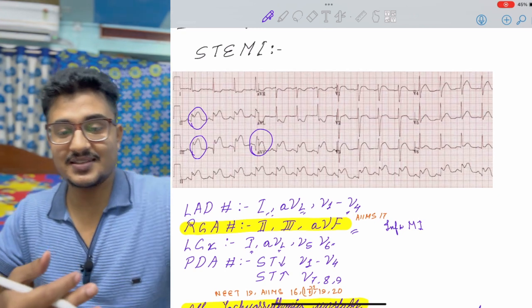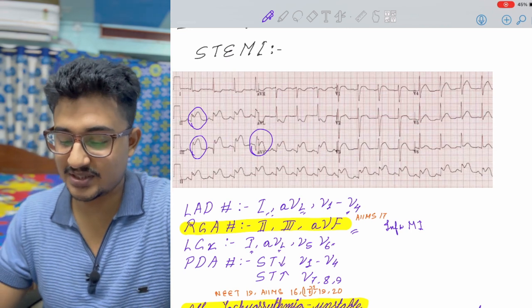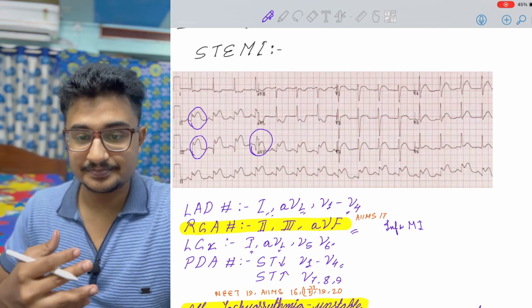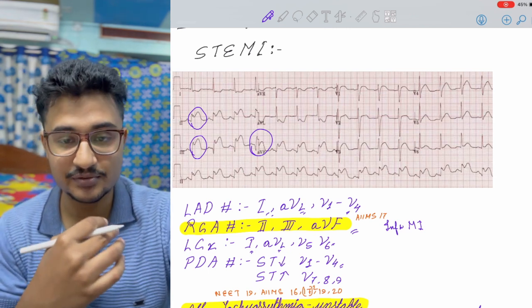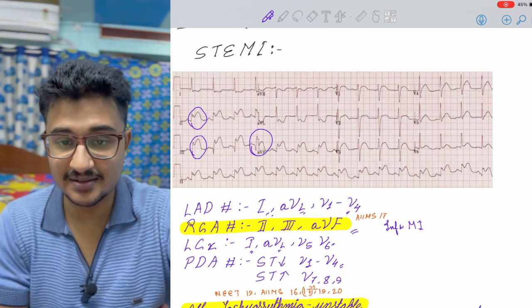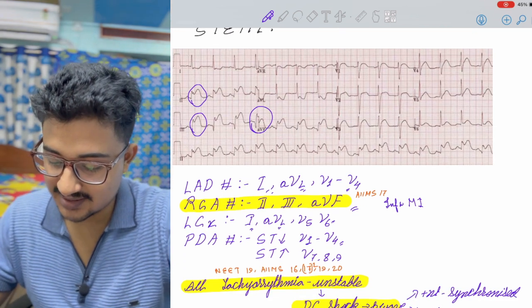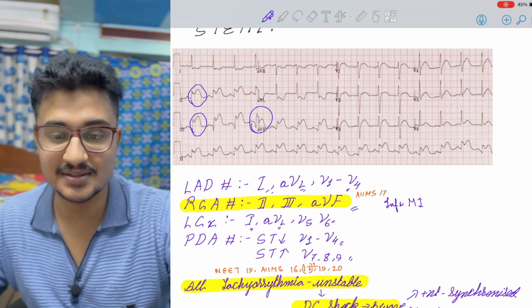In the posterior descending artery, it is in the back. In the front, there would be reciprocal changes, ST depression in V1 to V4. If the technician sees that there is depression in V1 to V4, he immediately does the reverse leads. In our emergency also, he used to do. There would be ST elevation in V7 to V9, the reverse leads.